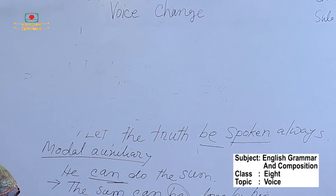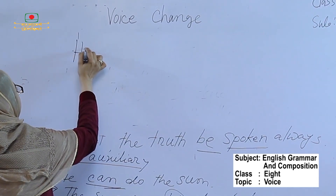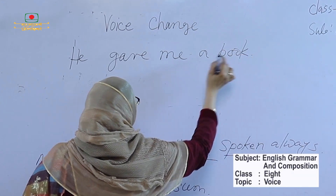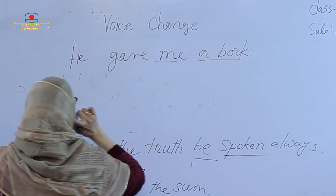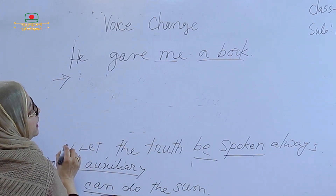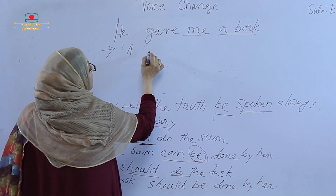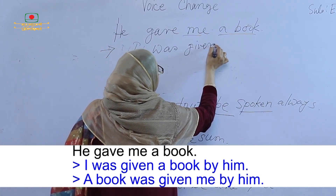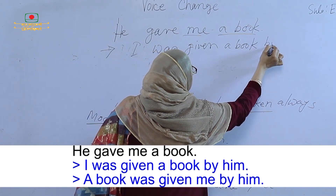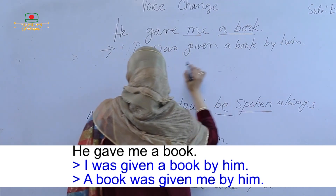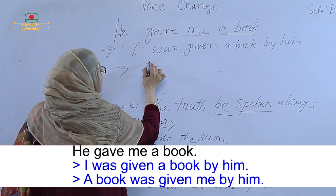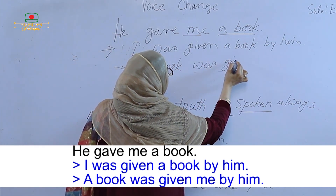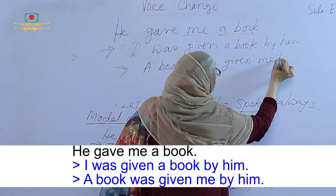Now we see some other examples using a double object. 'He gave me a book' — here we see a double object: one is 'me' and the other is 'a book'. We can turn it into passive as: 'I was given a book by him'. You can also turn it another way, using 'a book' as the subject: 'A book was given me by him'.